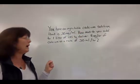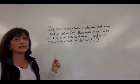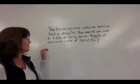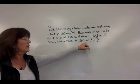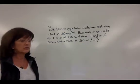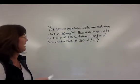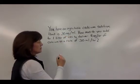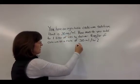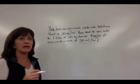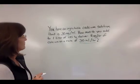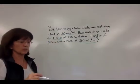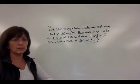How much do you add to one liter of lactated Ringer's solution to deliver 4 mg/hour of calcium at a rate of 30 mLs per hour? I can see the concentration of the solution, the fluid rate for the pump, and the total volume of fluid, which is one liter or 1,000 mLs.